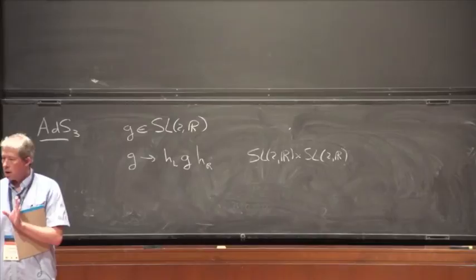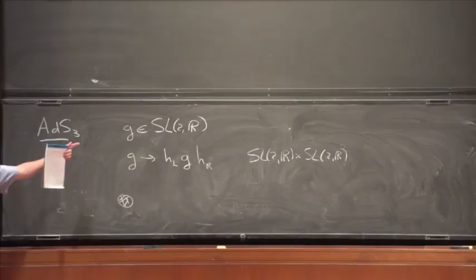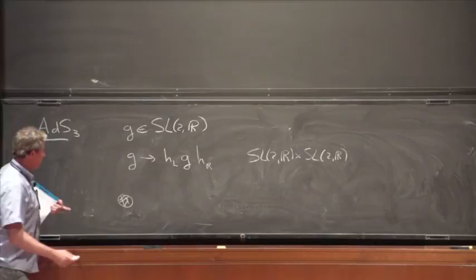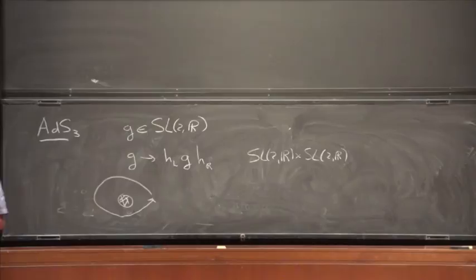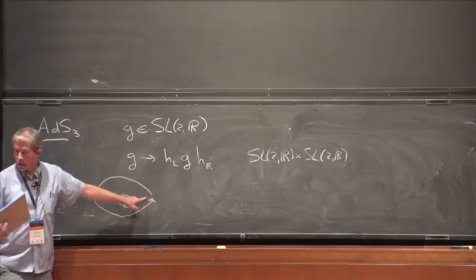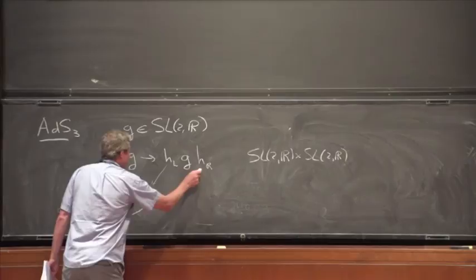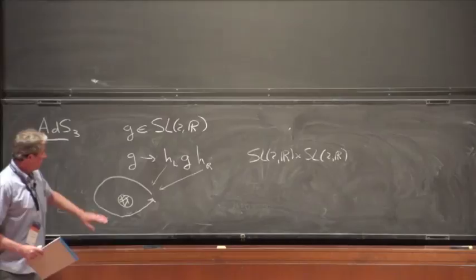If I have some object — it could be a black hole or a particle — and I'm outside the region of stress energy, everything looks locally like an SL(2,R) manifold. But if I go around and come back, I no longer return to the same group element. That's a curvature singularity. You have what we call holonomies, labeled by H_L and H_R, where H_L and H_R are determined in terms of the mass and angular momentum of the object. This is essentially all you need to know about 2+1 dimensional gravity.